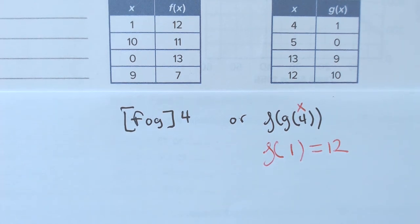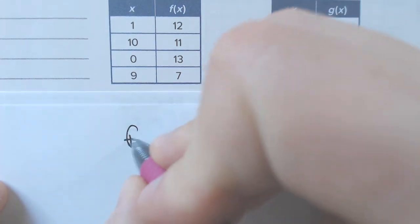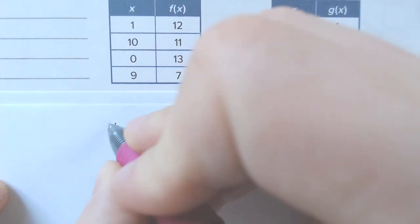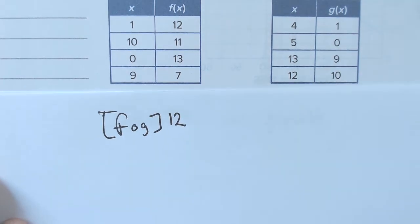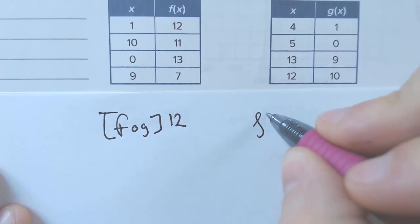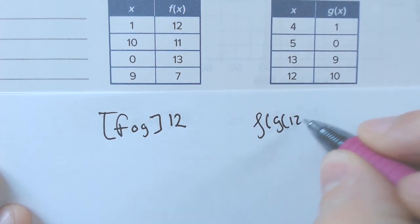So, let's try another one. Let's say we have, let's do f of g of 12. Okay? Which is the same thing as saying fog of 12.